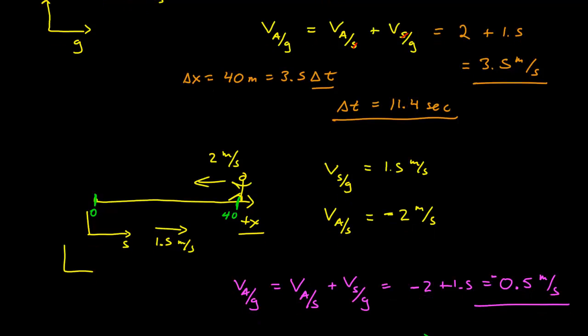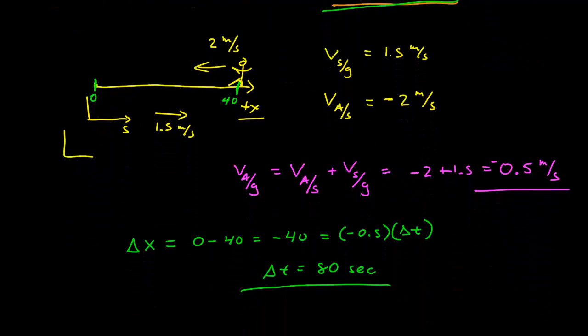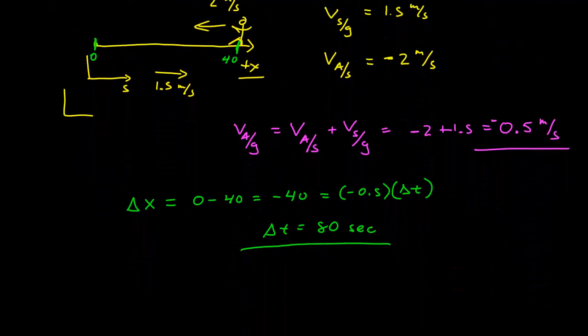So it takes 11.4 seconds to go with the belt for the 40 meters, but 80 seconds to come back against it.